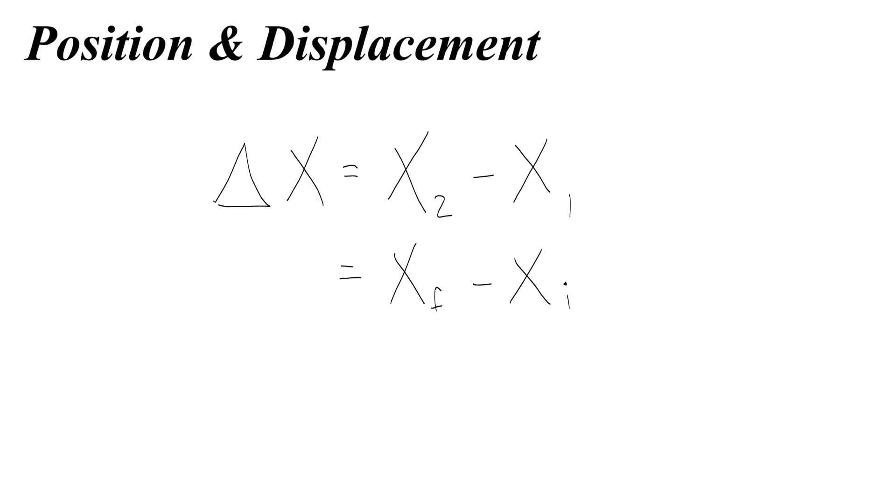Well in physics it's more common to write this as xf minus xi, for your final position minus your initial position. And what I'm going to do to make things easier, with fewer subscripts, is instead of saying xf and xi, I'm just going to say x and x sub 0. This is pronounced naught.